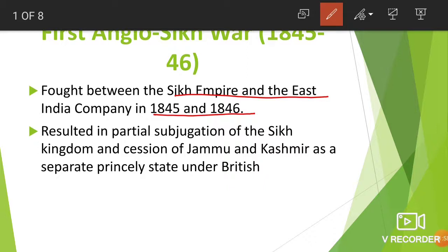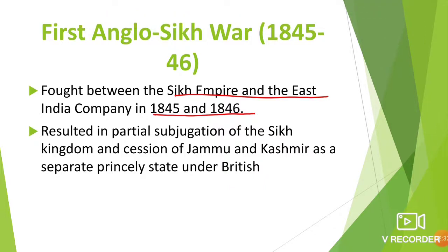Ranjit Singh was a very powerful ruler, but after his death his kingdom fell into a lot of disorders, and as a result the First War took place between the Sikhs and the Britishers. Jammu and Kashmir was annexed by the Britishers. Dalip Singh was a small kid at that time in 1845 — born in 1838, he was around 7 years old. The Sikh Empire wanted Dalip Singh to be made king.